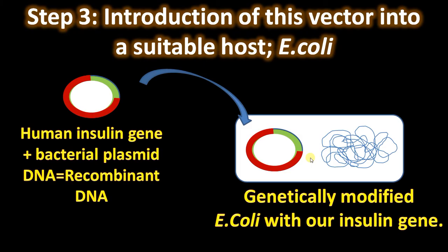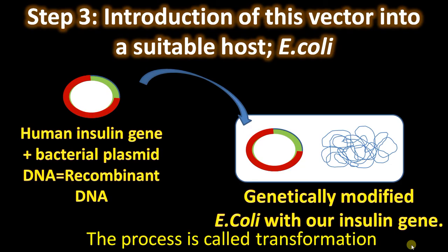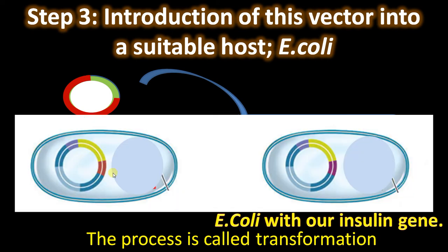Different gene transformation methods include electroporation, microinjection, and calcium chloride-mediated transformation. You can refer to our previous video on recombinant DNA technology for more details. We now have a genetically modified E. coli with our insulin gene. This process is called transformation — transforming E. coli with a foreign gene. We have the recombinant vector with the A gene in one culture and the recombinant vector with the B gene in a second culture.